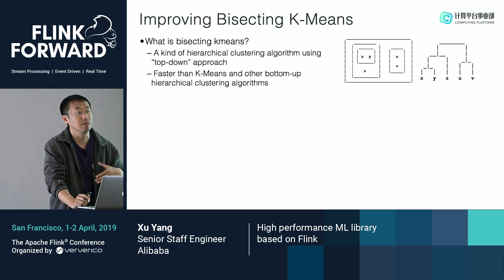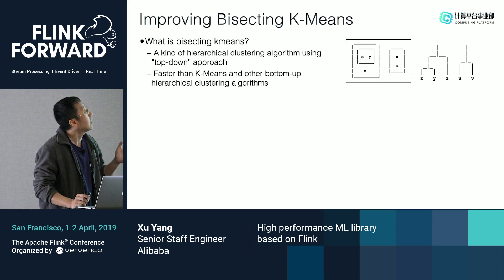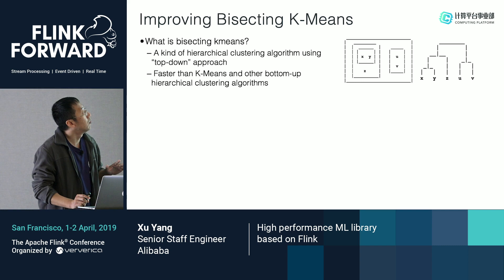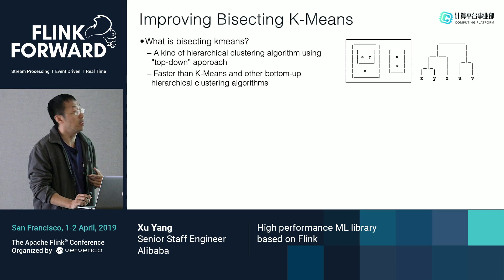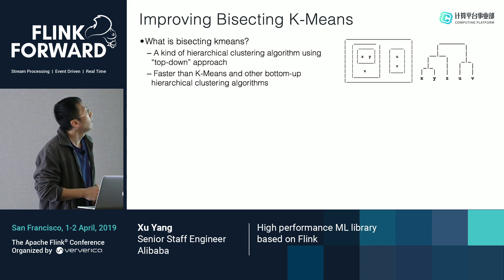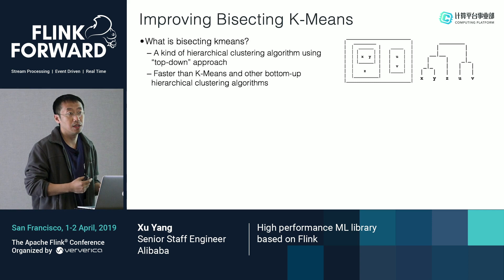Bisecting k-means is an extension of the k-means algorithm. K-means each time clusters k clusters, but bisecting k-means each time only clusters two clusters. To get multiple clusters, we can apply bisecting k-means multiple times. Overall, bisecting k-means has a faster speed than the original k-means, and it is still very useful in practice. Because we have a high-performance implementation of k-means, we can get high-performance bisecting k-means that outperforms Spark ML.